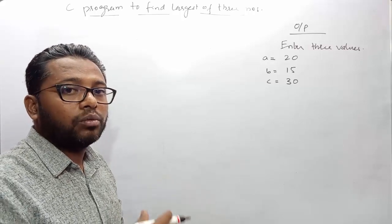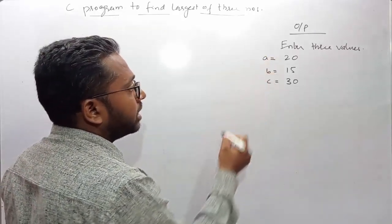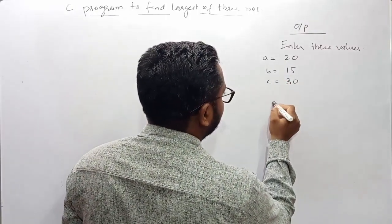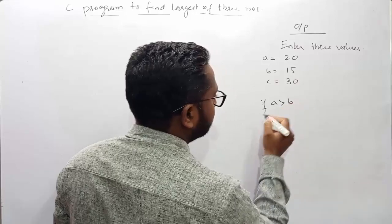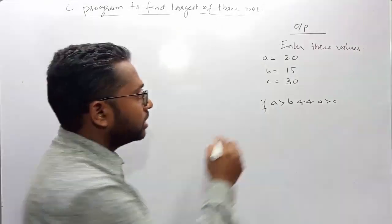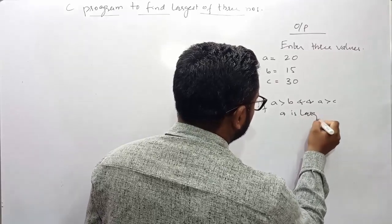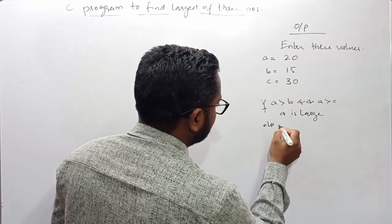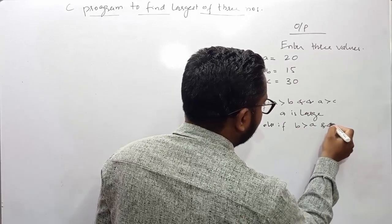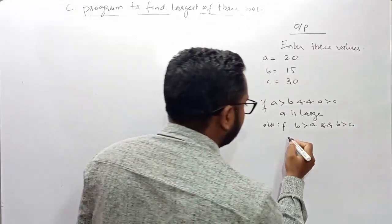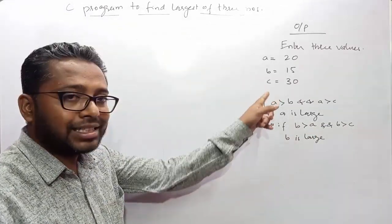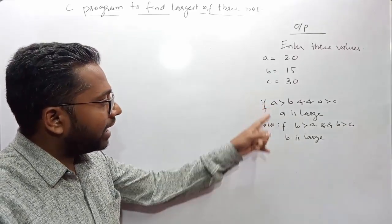In the else-if condition, I'll check whether 'b' is greater than 'a' AND 'b' is greater than 'c'. If so, then 'b' is the largest. For checking 'c', I won't add another if condition — if neither 'a' nor 'b' is the largest, then obviously 'c' is the largest, handled by the else clause.